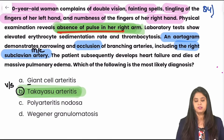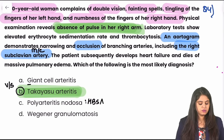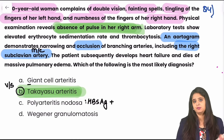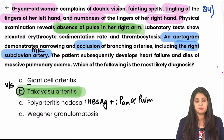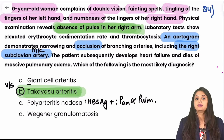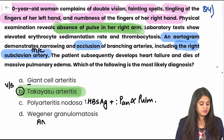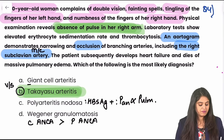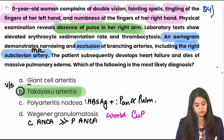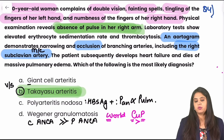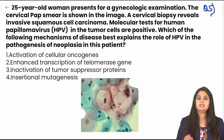For the other options: polyarteritis nodosa will always give a history of hepatitis B surface antigen in MCQs, and will never involve the pulmonary system. Wegener's granulomatosis is associated with ANCA antibodies — both C-ANCA and P-ANCA — however C-ANCA is more commonly affected. We learned this with the mnemonic 'World Cup': W for Wegener's, C-ANCA more common.